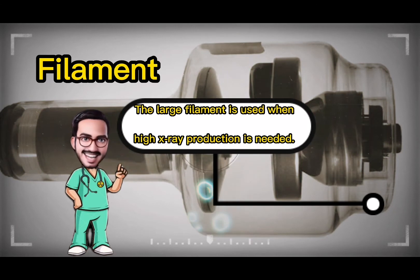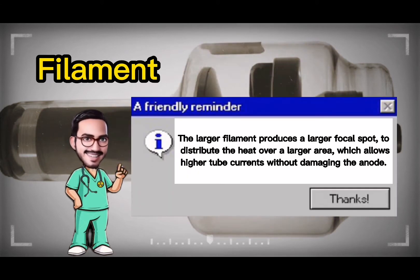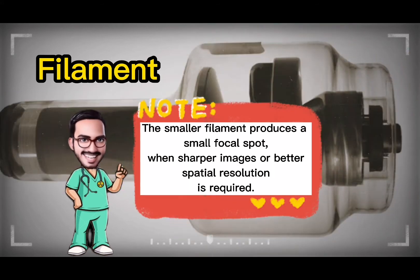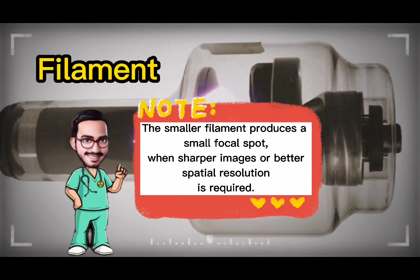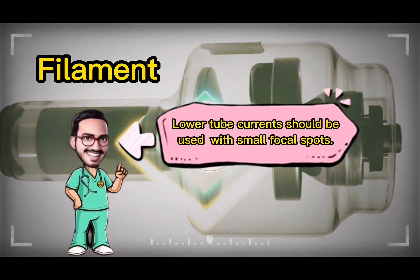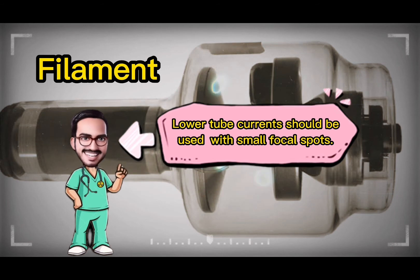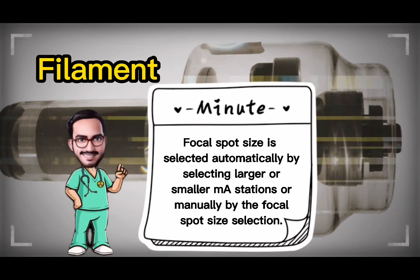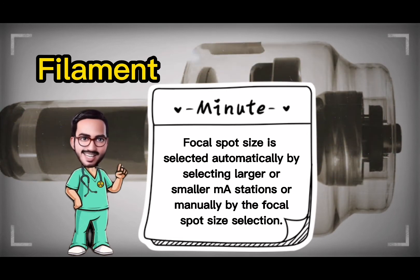The large filament is used when high x-ray production is needed. The larger filament produces a larger focal spot to distribute heat over a larger area, allowing higher tube currents without damaging the anode. The smaller filament produces a small focal spot when sharper images or better spatial resolution is required. Lower tube currents should be used with small focal spots. Focal spot size is selected automatically by selecting larger or smaller mA stations, or manually by focal spot size selection.